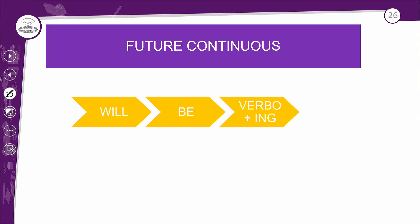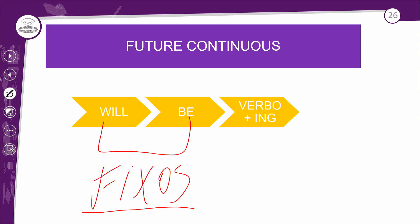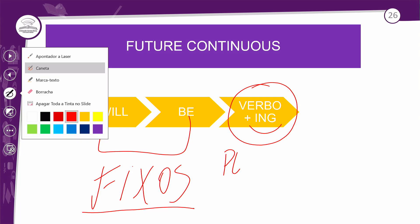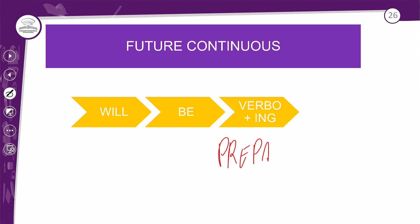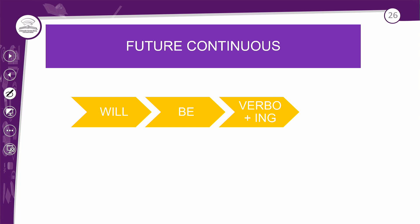Vamos entender esse Future Continuous. Você vai precisar sempre do 'will be' — eles são fixos, vêm sempre na frase, seja afirmativa, negativa ou interrogativa. Logo em seguida, o verbo com a estrutura do ING. Lembre das regrinhas do ING: regra geral, você só acrescenta o ING ao fim do verbo; para verbos que terminam com E, você tira o E para colocar o ING — como o verbo 'prepare', por exemplo.